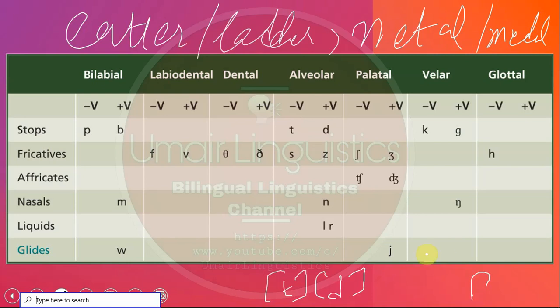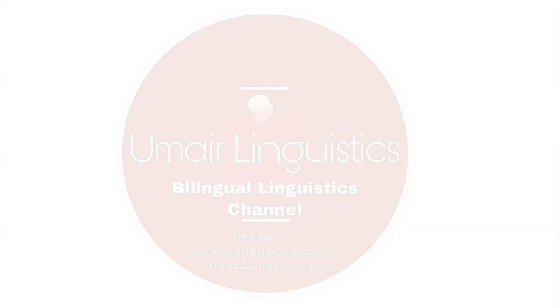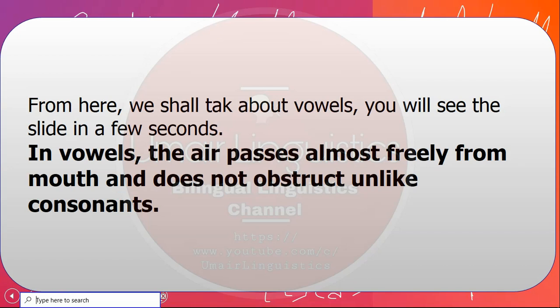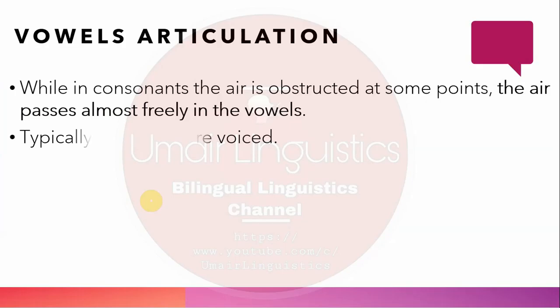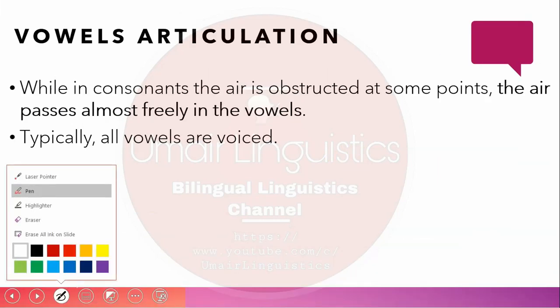Now we are moving towards vowels. While in consonants the air is obstructed at some point in the mouth, in vowels the air passes almost freely. As the tongue moves — sometimes forward, sometimes significantly higher, sometimes lower — that determines the manner of articulation for vowels. First of all, we need to know that typically all vowels are voiced, unlike consonants which may be voiced or voiceless.